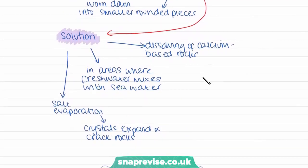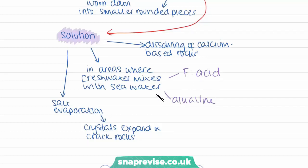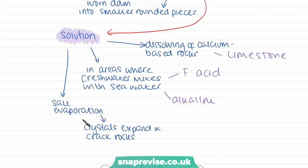Finally, we have solution, which mostly relates to the dissolving of calcium-based rocks. In areas where fresh water mixes with sea water, the fresh water can be slightly acidic. We know sea water is actually very alkaline, but where fresh water meets sea water it can be slightly acidic, and this acid can dissolve calcium-based rocks such as limestone found along many coastlines. Another type of solution relates to salt evaporation: when water evaporates, salt is left in the cracks of the rock. When the rock heats up during the day, these crystals expand and the pressure from the expanding crystals can also cause stress in the rock and cause it to crack.